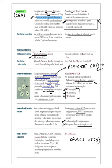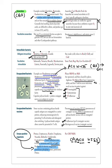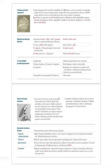Urease-positive organisms — mnemonic 'PUNCH': P = Proteus, U = Ureaplasma, N = Nocardia, C = Cryptococcus, H = H. pylori. Also Staphylococcus epidermidis, saprophyticus, and Klebsiella. Urease hydrolyzes urea to produce ammonia and CO2, raising pH, causing triple phosphate (struvite/magnesium ammonium phosphate) stones with staghorn calculus appearance.